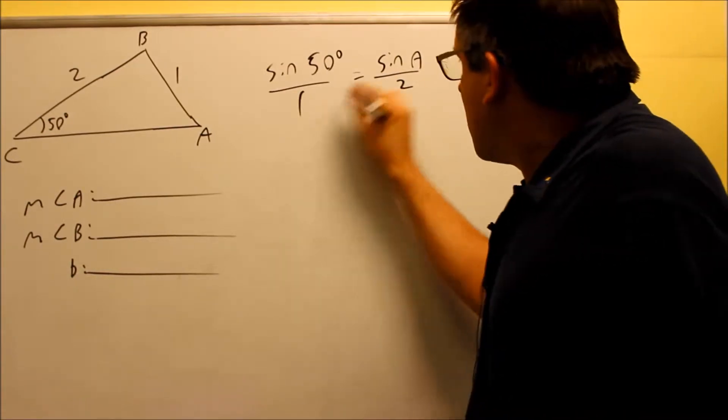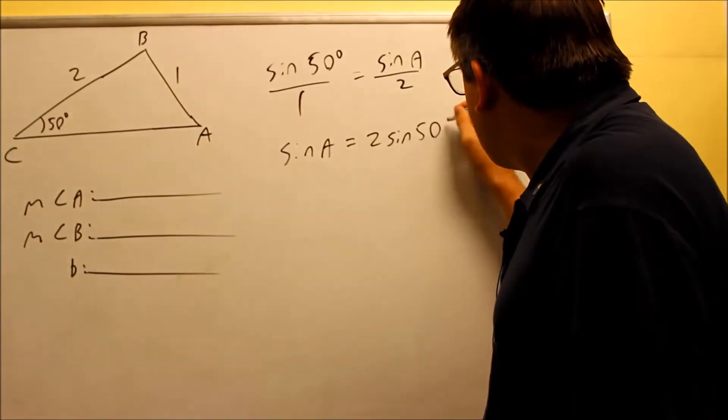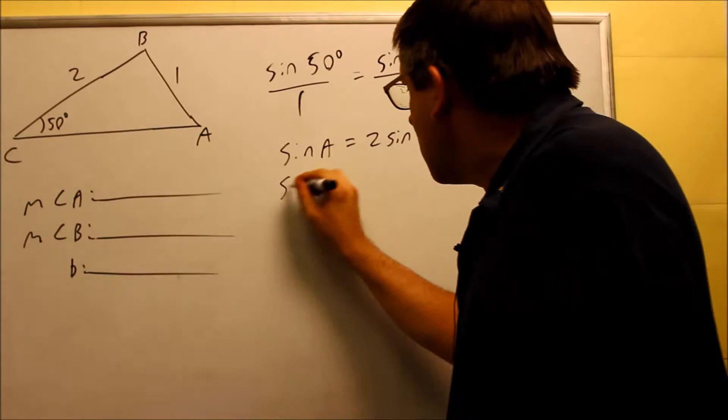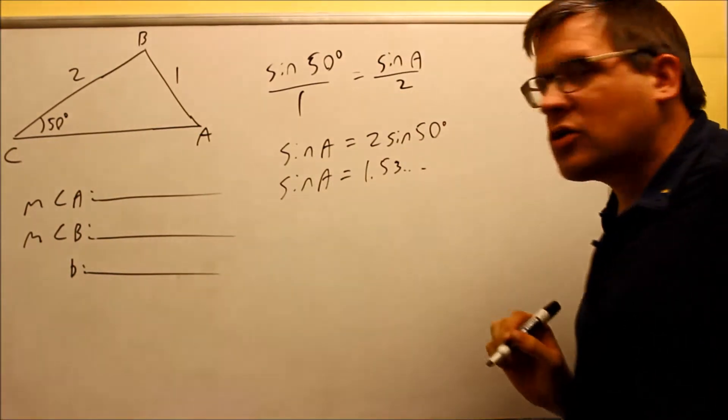Okay, so when we cross-multiply, sine A equals 2 sine 50, and we want to put 2 sine 50 into our calculator, we get sine A is equal to about 1.53 with some more decimals.